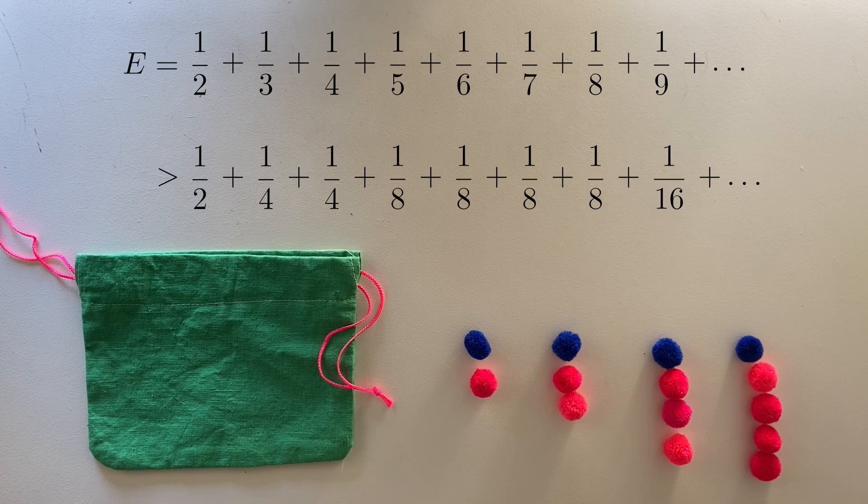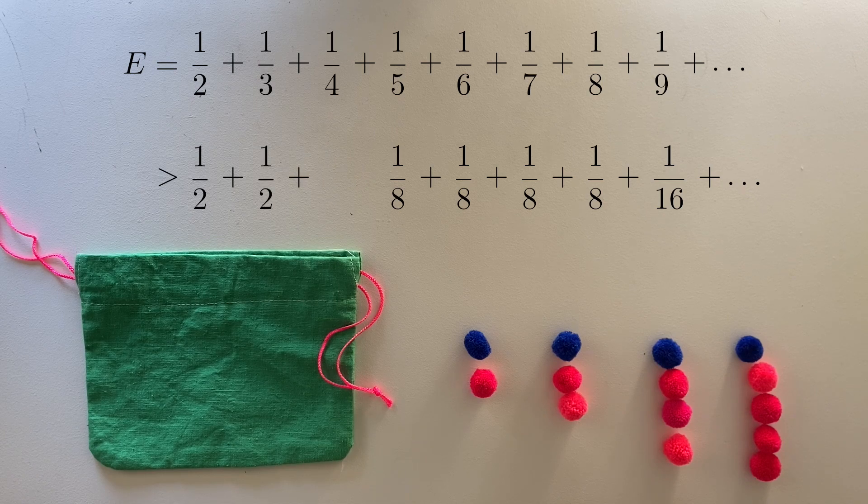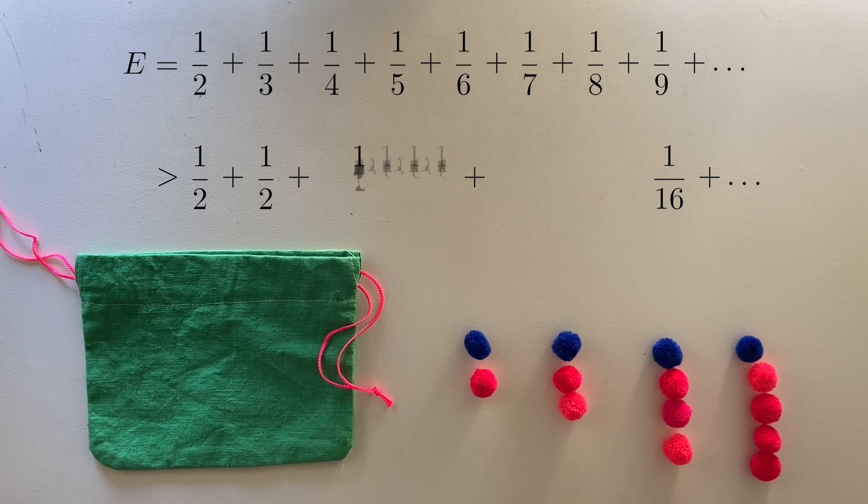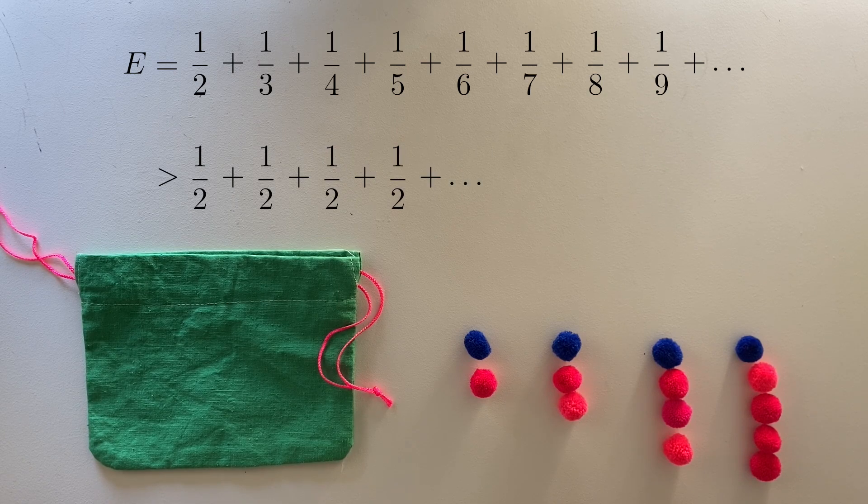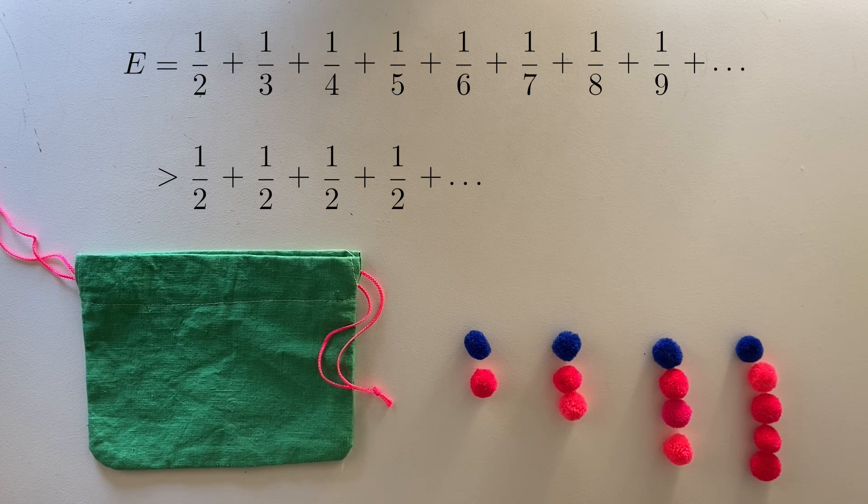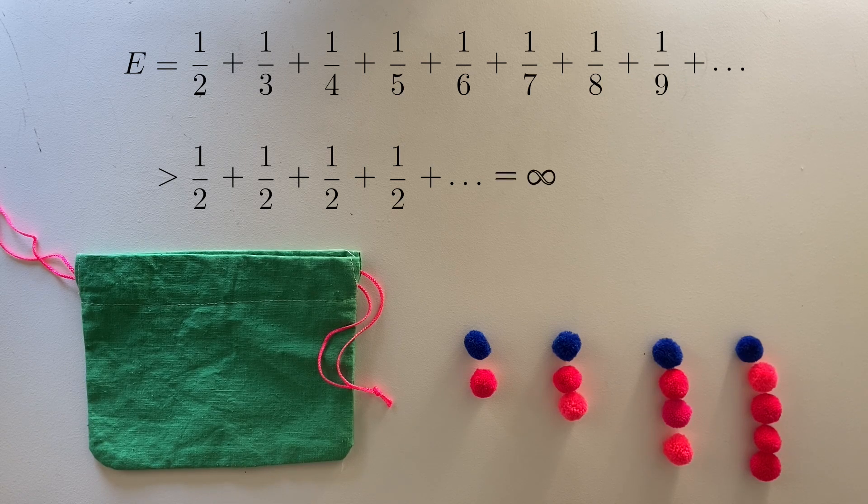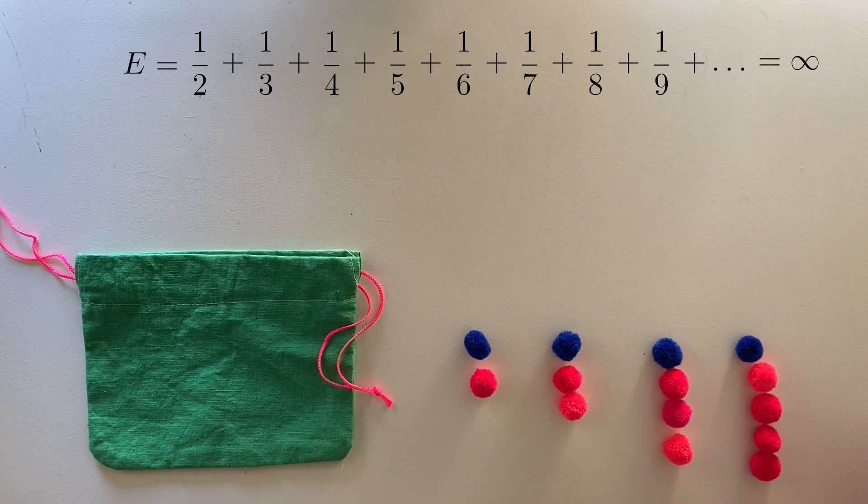Clearly, this new sum that we've created is smaller, because the terms in the denominator are all bigger. But the two quarters group together to give a half. The four eighths group together to give a half. The eight sixteenths group to give one half, and so on down the line. So this sum is actually just a half plus a half plus a half on and on, and that's clearly infinite. And since the sum we started with is bigger than this new sum we've created, it must be infinite as well.